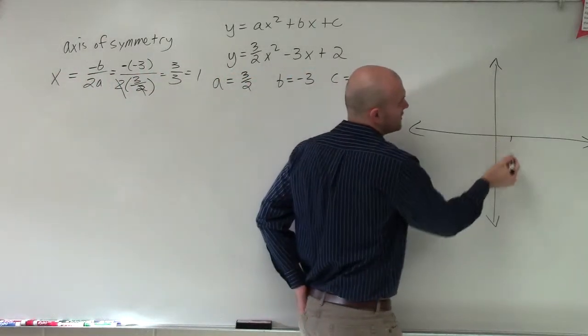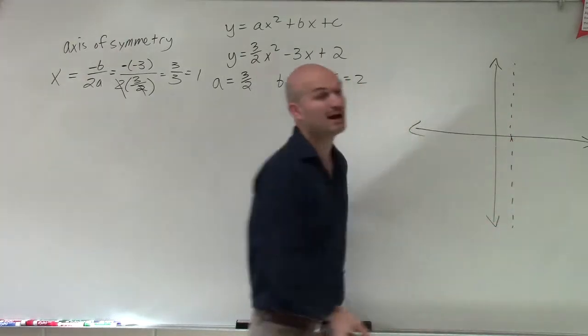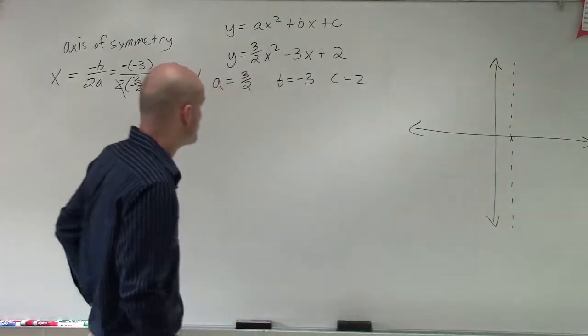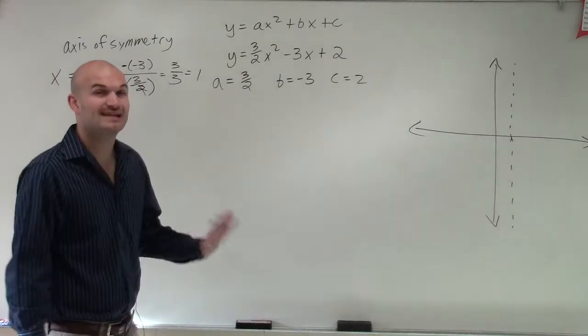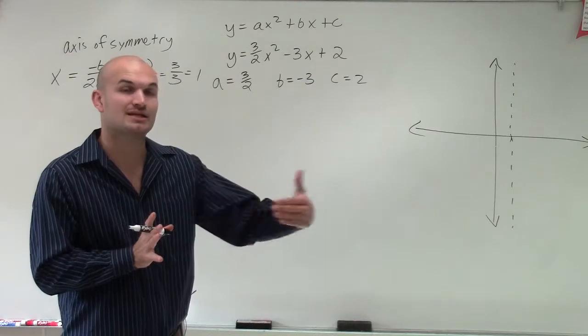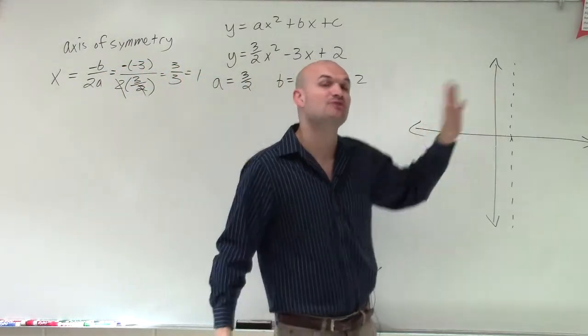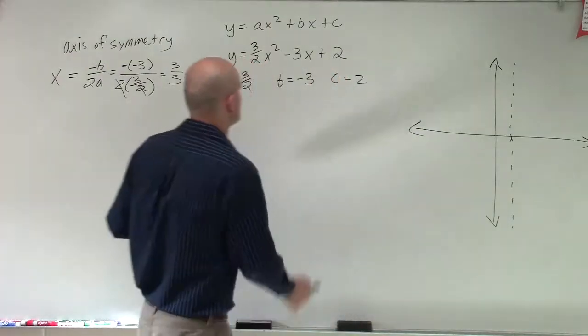So now I go over to my graph, and I go over to 1, and I create a vertical line, which is going to represent my axis of symmetry. Now what I need to do is, again, I need to create a table of values. And again, remember, the table of values that we're going to want to pick are going to be points that are going to be to the left or to the right. And then what I can use is use my axis of symmetry to reflect those points to the other side.